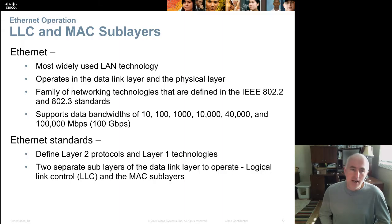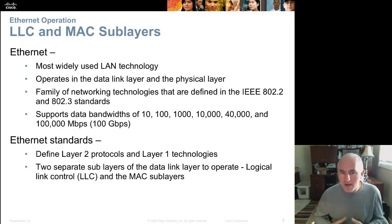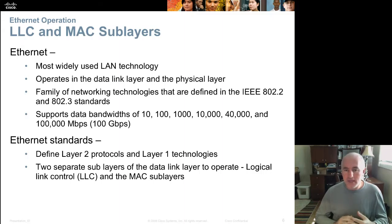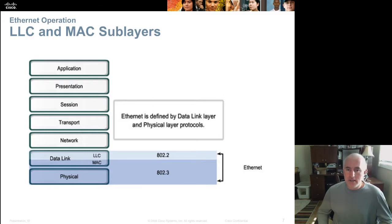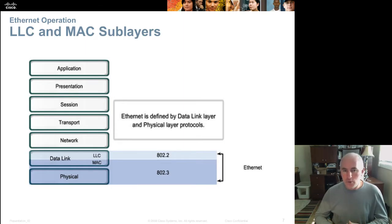Ethernet defines the OSI Layer 2 and Layer 1 technologies, and the OSI model's seven layers are also broken down into various sub-layers. This is a chapter where we will be looking at two of those. The data link layer is split into two sub-layers. Here's a graphical look at that — here are the seven layers of the OSI model with the bottom two layers, and you can see how the data link layer is split in half.